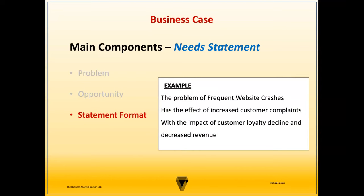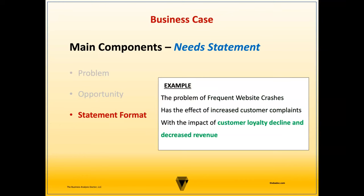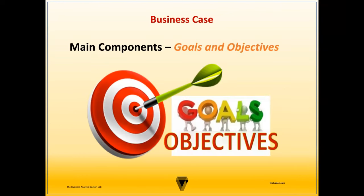For example, the problem of frequent website crashes has the effect of increased customer complaints, with the impact of customer loyalty decline and decreased revenue. Next is the goals and objectives section. Together, goals and objectives describe the outcome or final state once the initiative is complete.